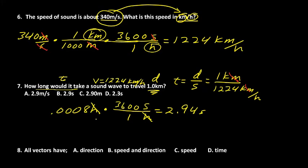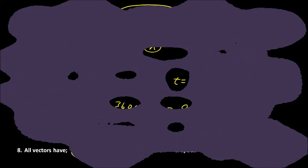Question eight: all vectors have what? All vectors have a direction. Velocity has a speed and a direction, but not all vectors are velocities. The answer is A — all vectors have this one thing in common: they all have a direction.